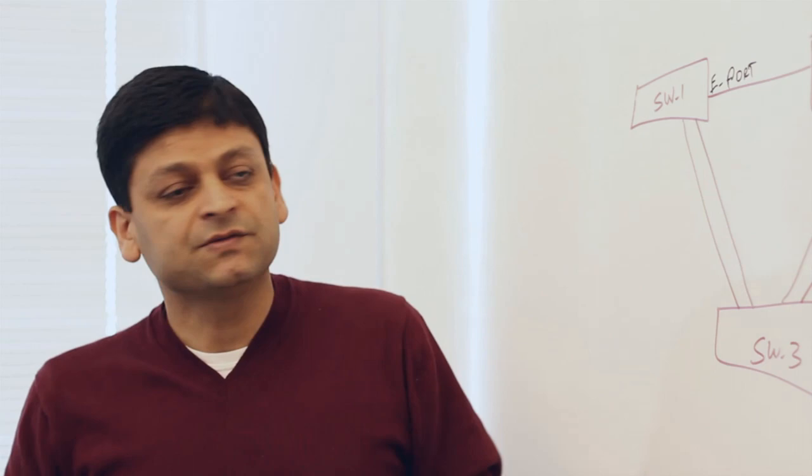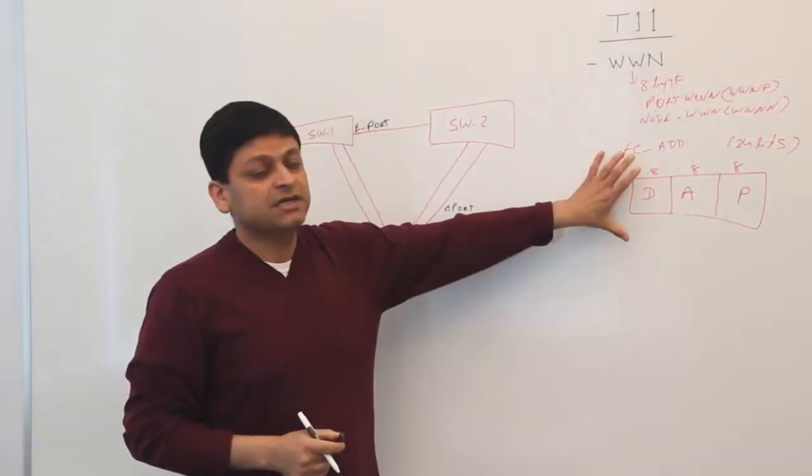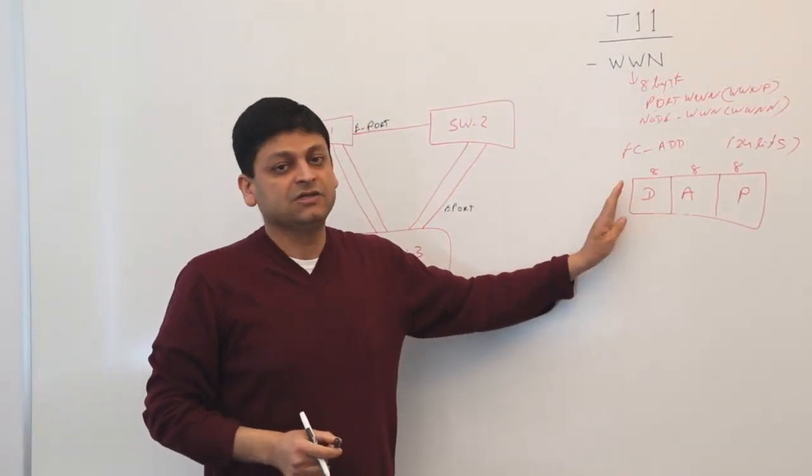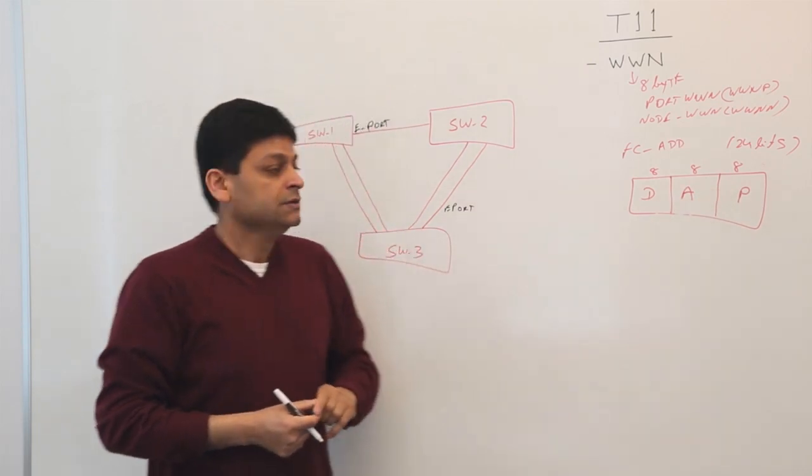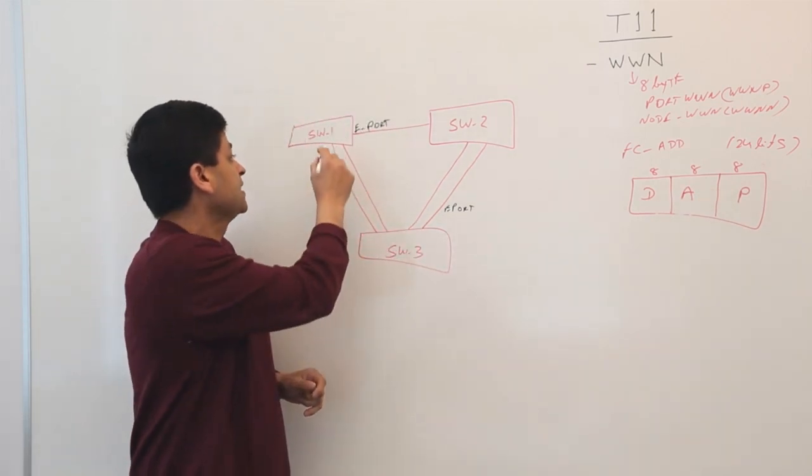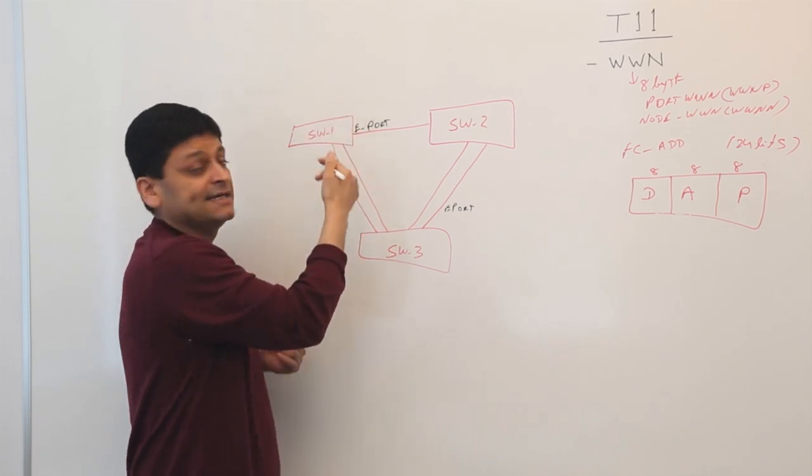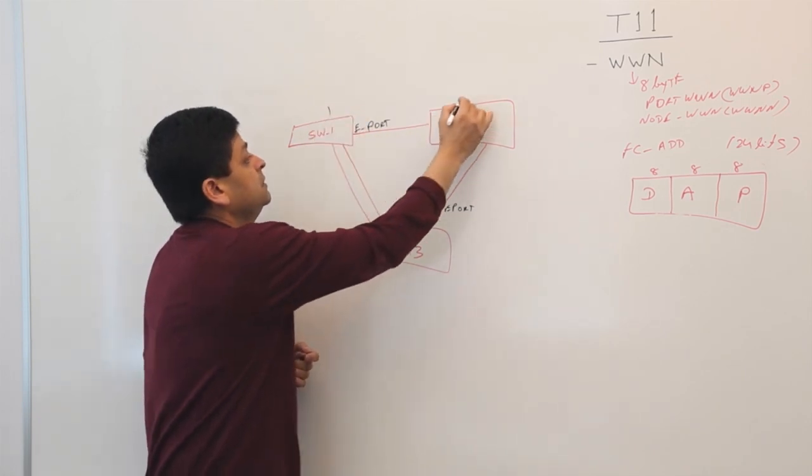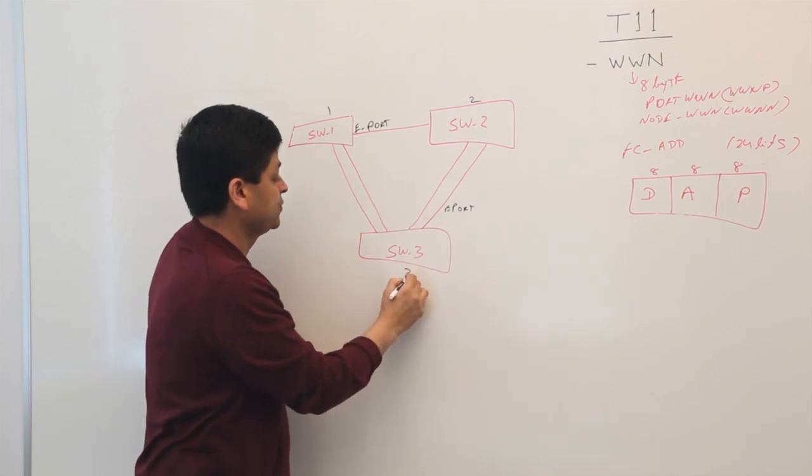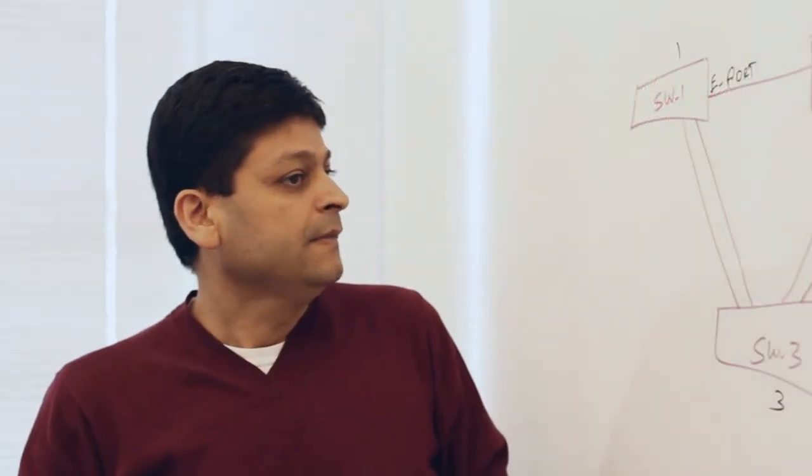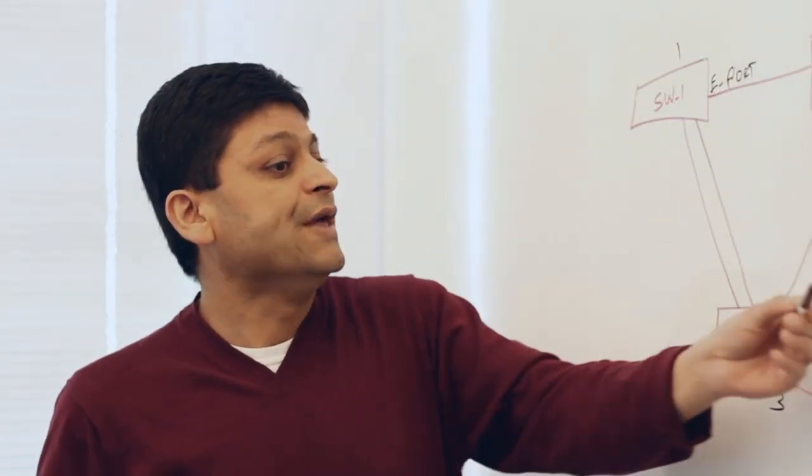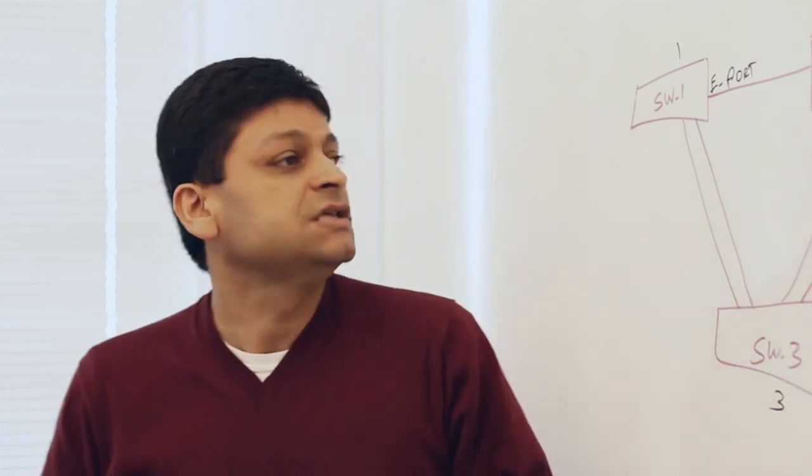Also in the previous video we talked about Fiber Channel addresses where we have a domain, area, and port. So each switch will get a domain. Here you can see this switch will get a domain or an identity of one, two, and three. That's where domain typically comes in.